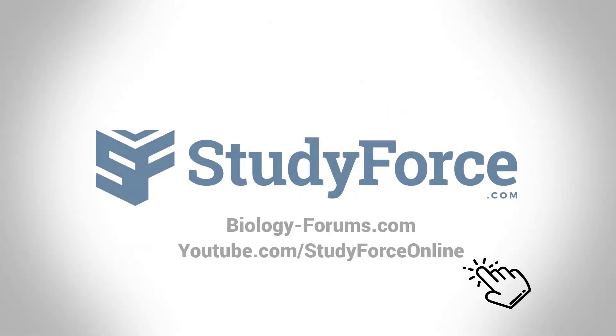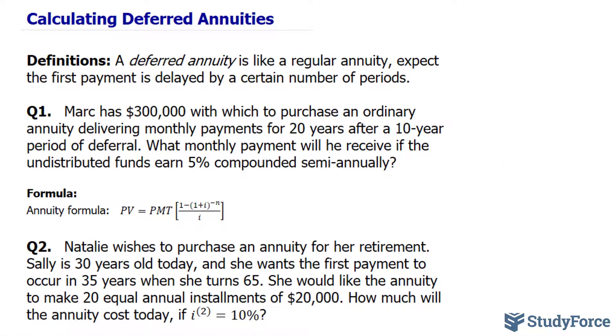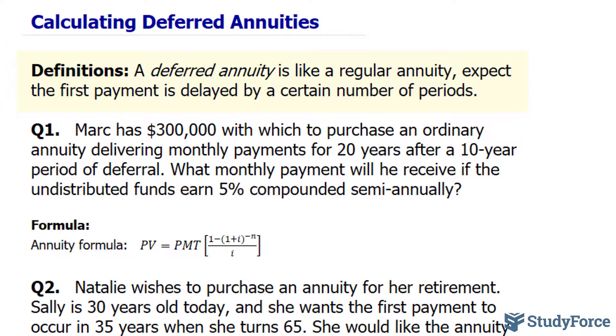In this lesson, I'll show you two examples on how to calculate deferred annuities. Let's begin with a quick definition. A deferred annuity is like a regular annuity, except the first payment is delayed by a certain number of periods.